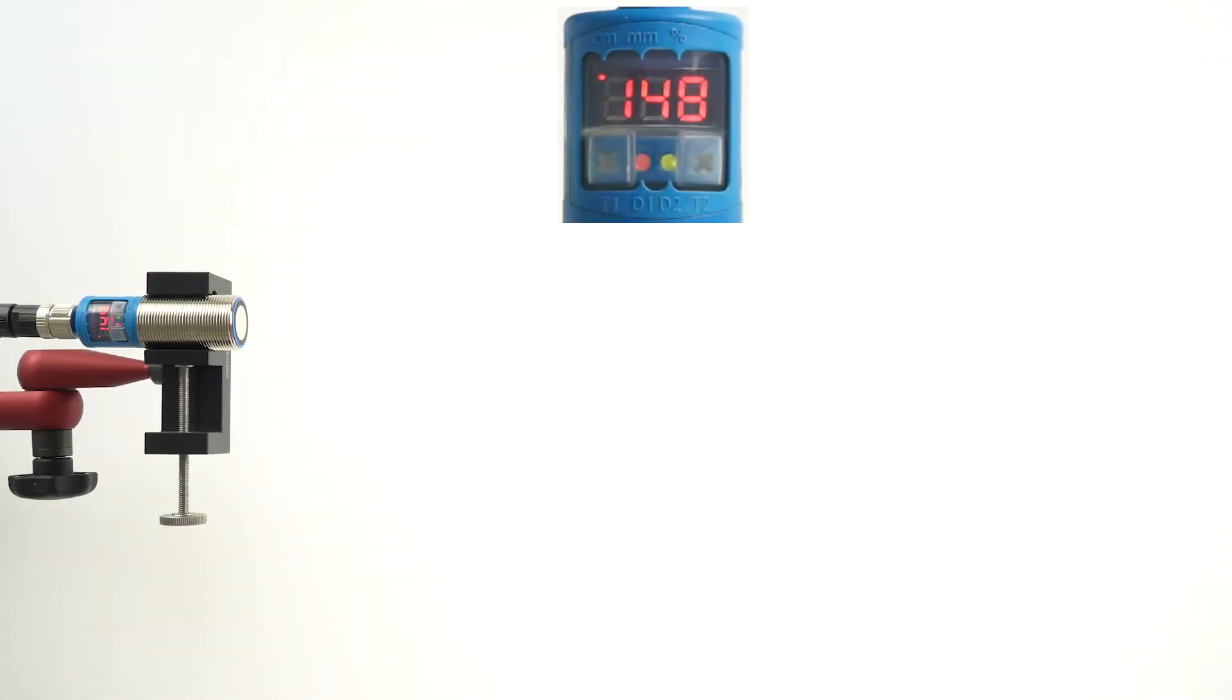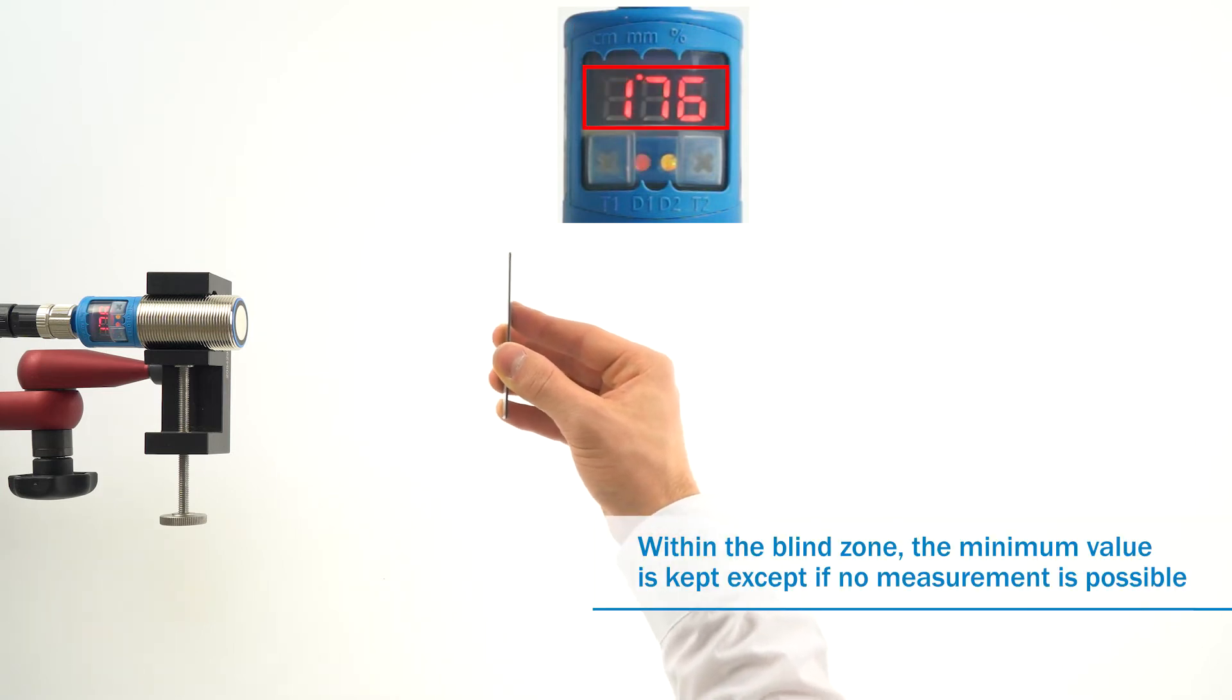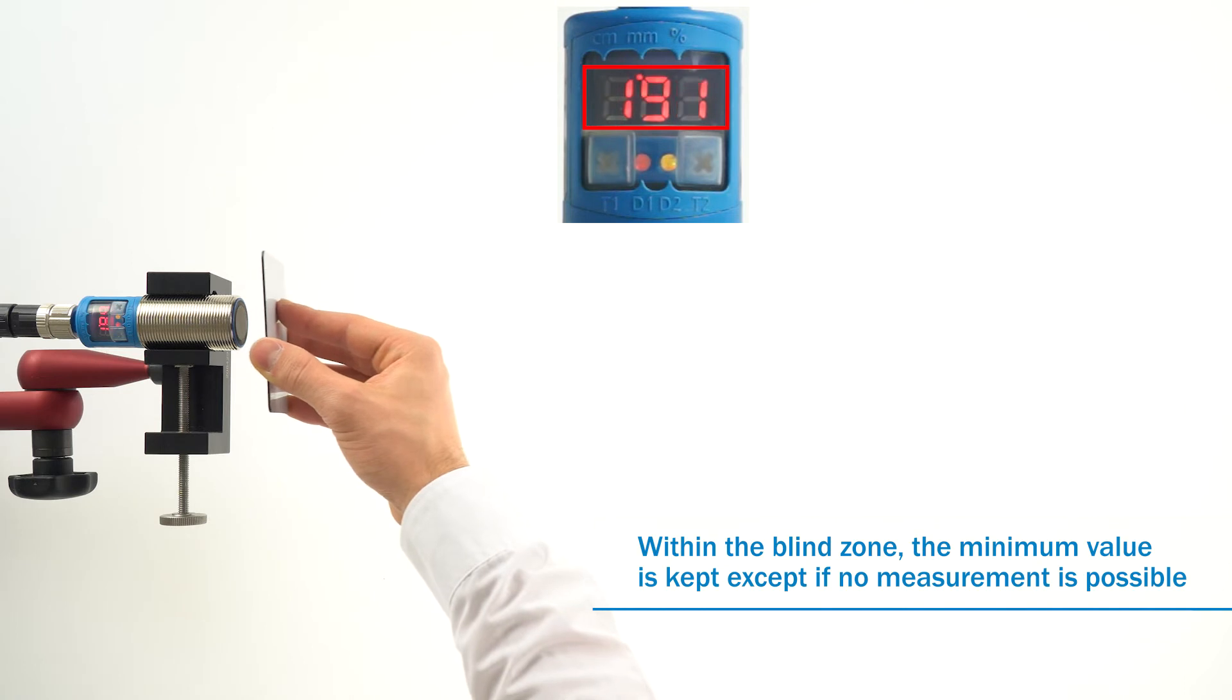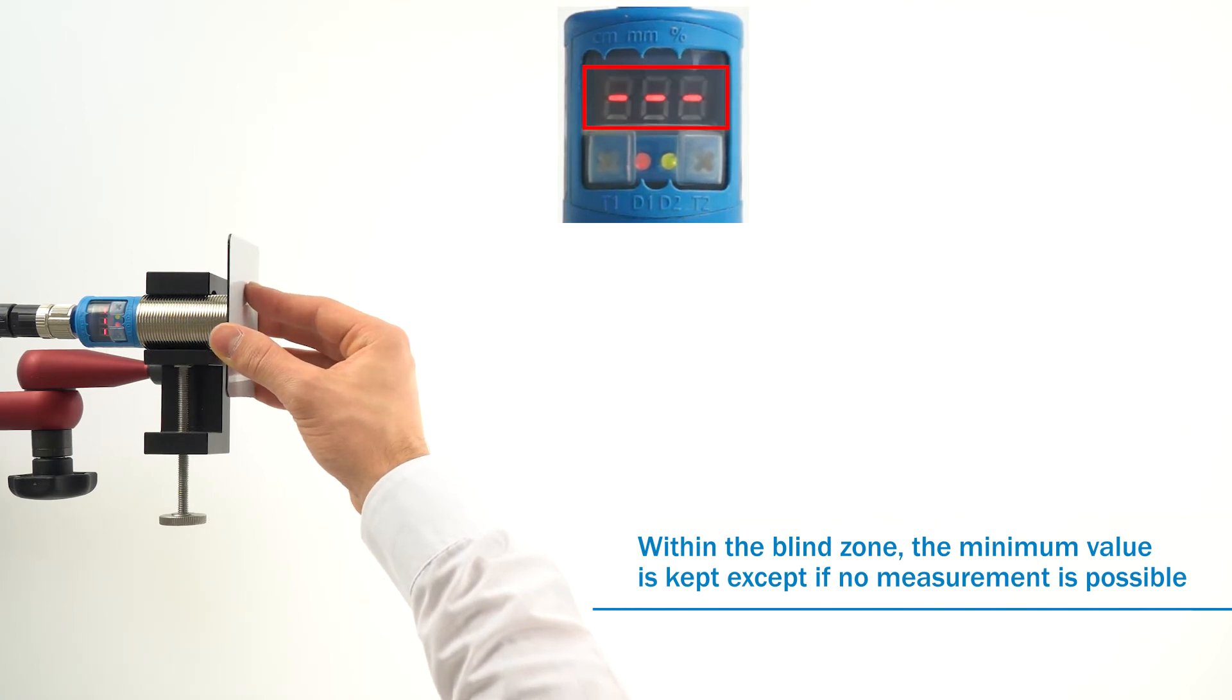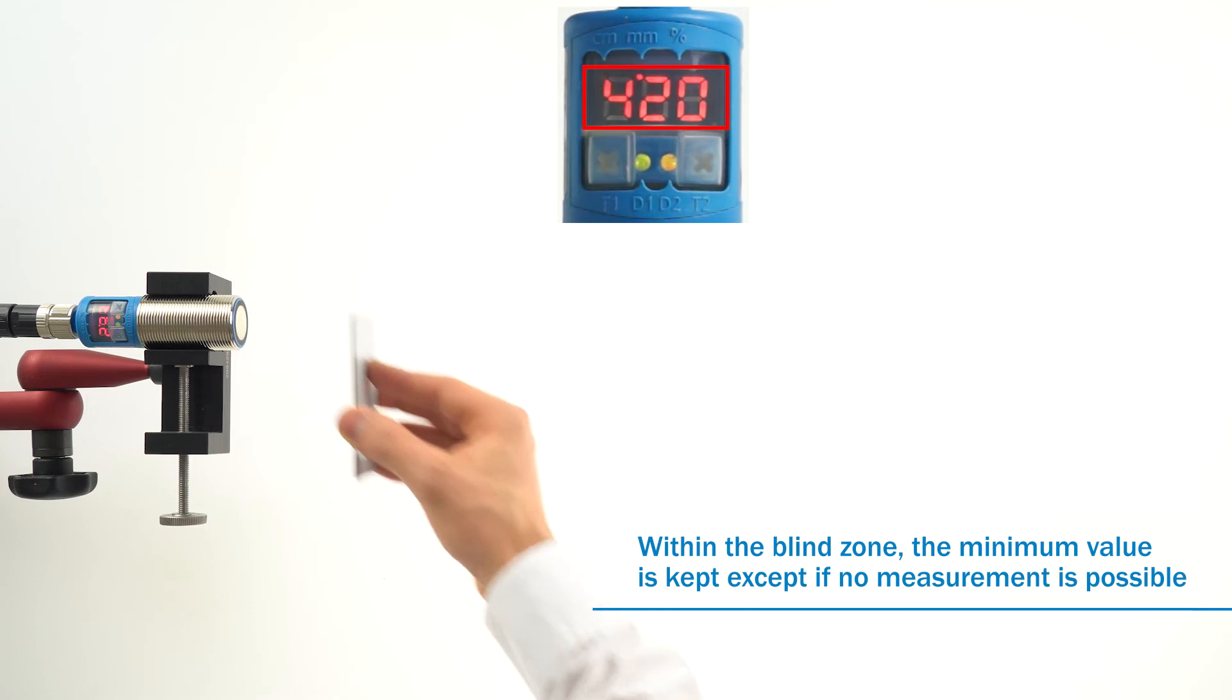The display of the UM30-2 shows you the currently active scaling at the top of the display with an indication point. The current measurement value is always shown on the display, except if no measurement is possible. In this case, the display shows three lines instead.